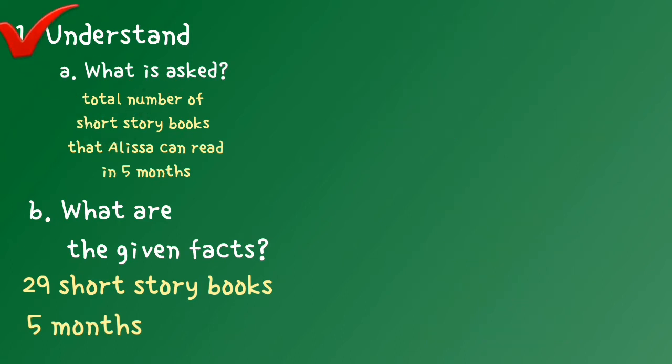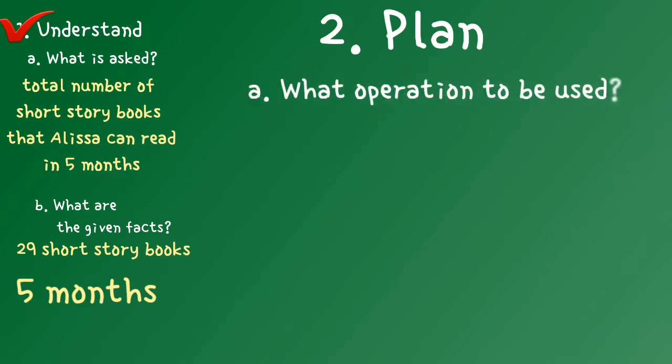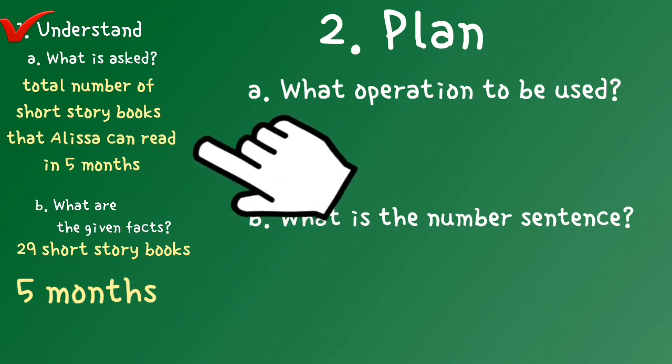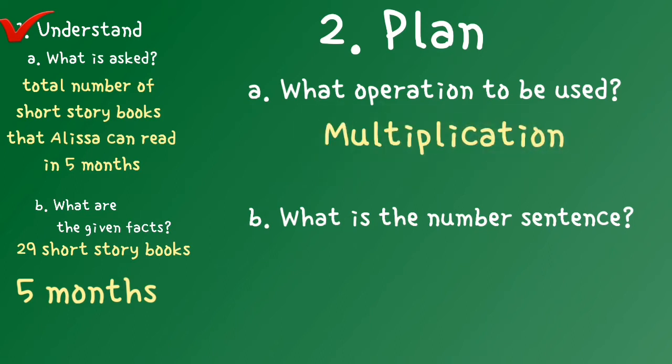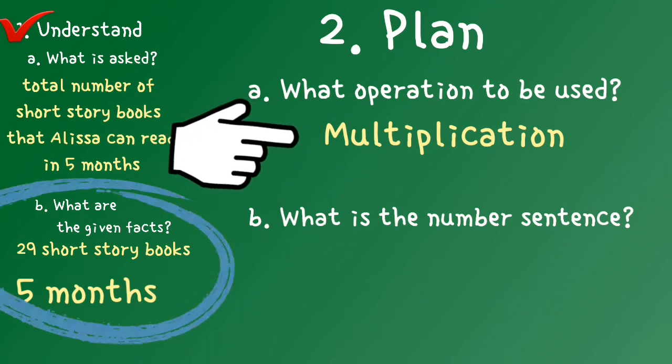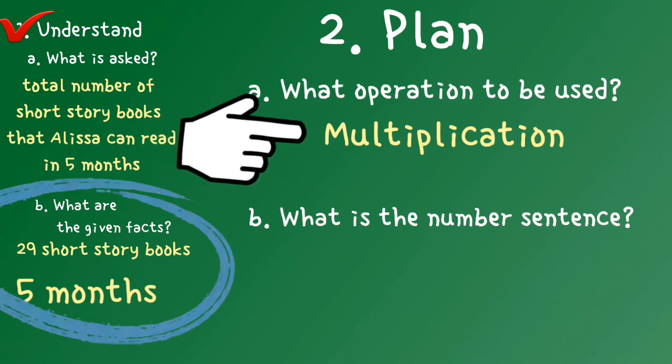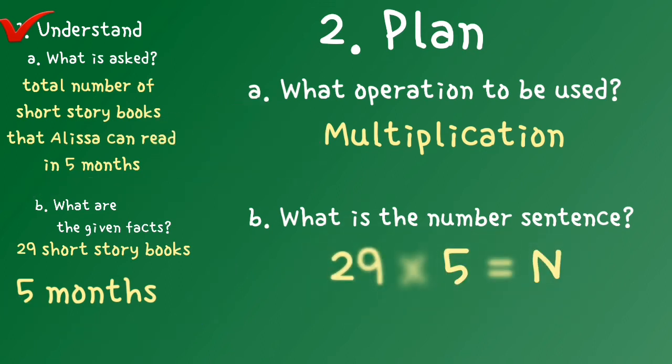Step two: Plan. Determine what operation to be used, then make a number sentence. Based on what is asked in the problem, the operation that we're going to use is multiplication. With the given facts and the operation, we can now write a number sentence: 29 times 5 is n. Step 2 done.